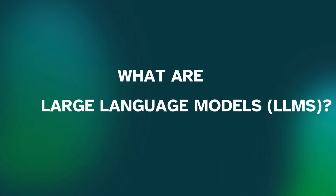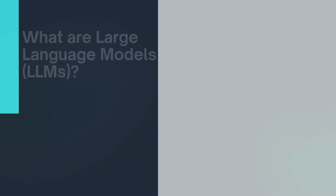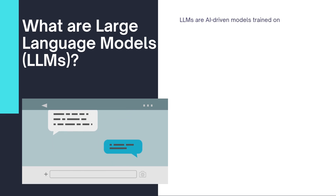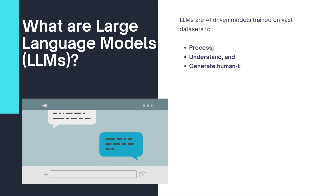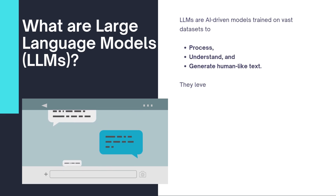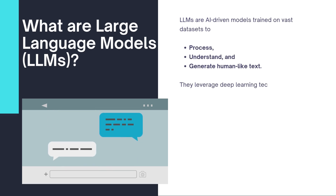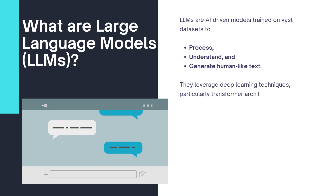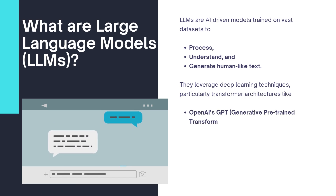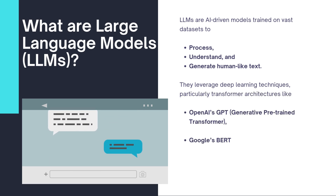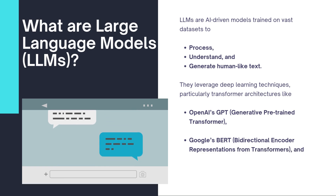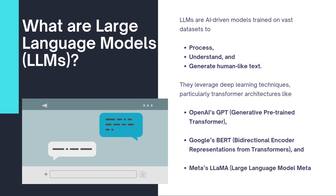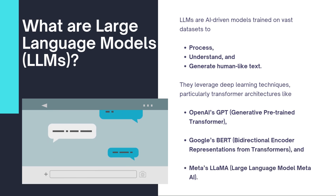What are large language models, or LLMs? LLMs are AI-driven models trained on vast datasets to process, understand, and generate human-like text. They leverage deep learning techniques, particularly transformer architectures like OpenAI's GPT (Generative Pre-Trained Transformer), Google's BERT (Bi-Directional Encoder Representations from Transformers), and Meta's Llama (Large Language Model Meta AI).